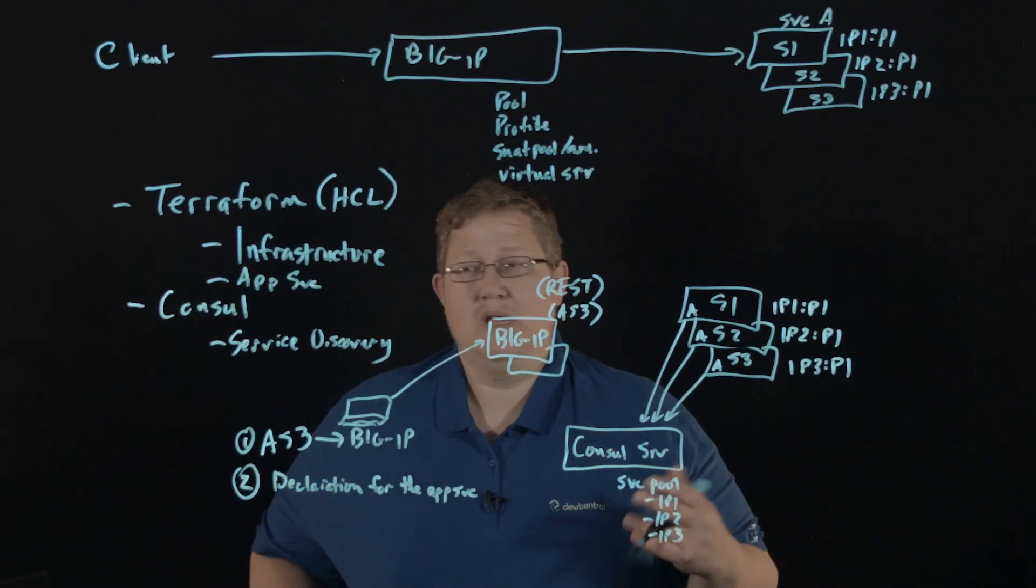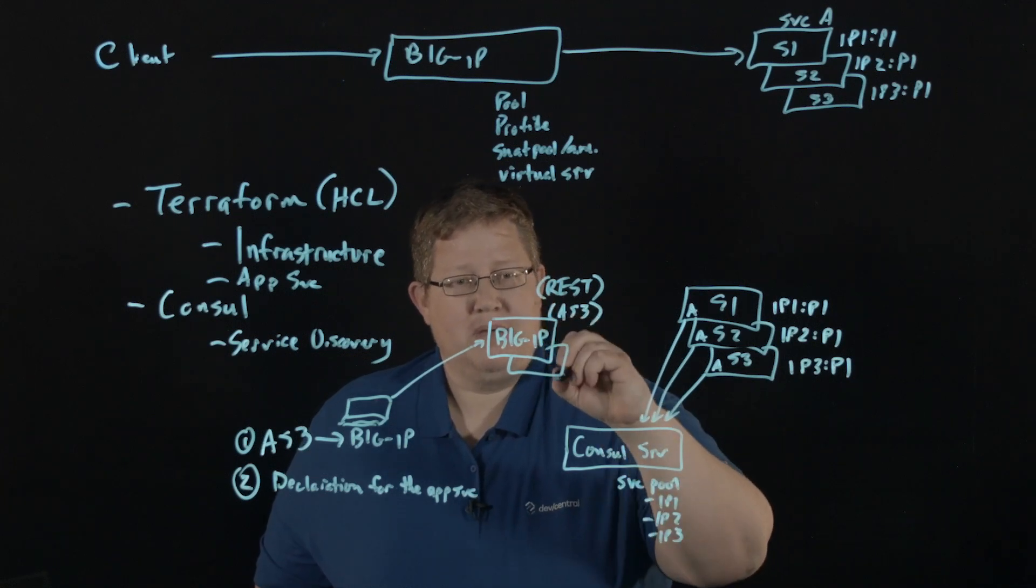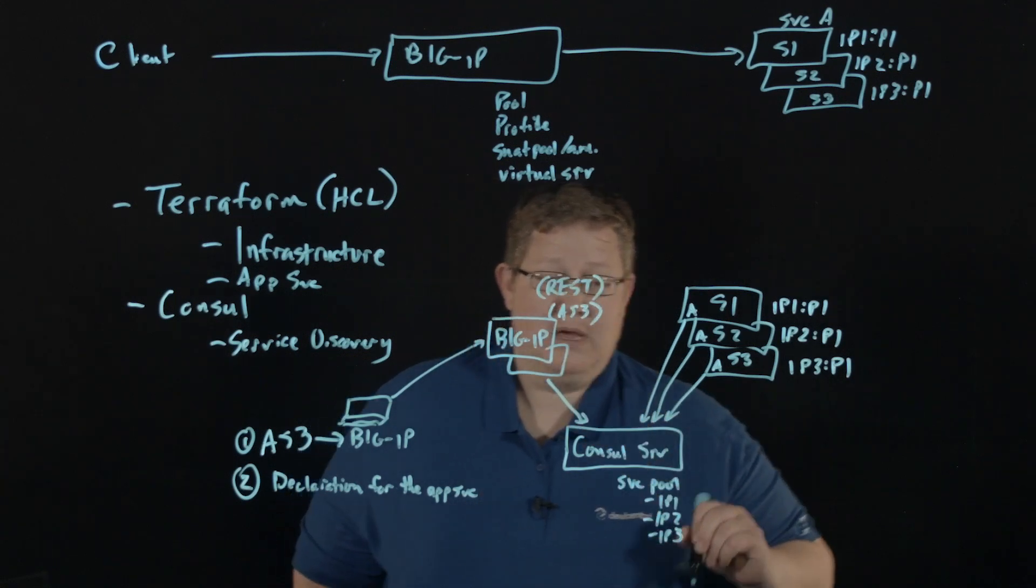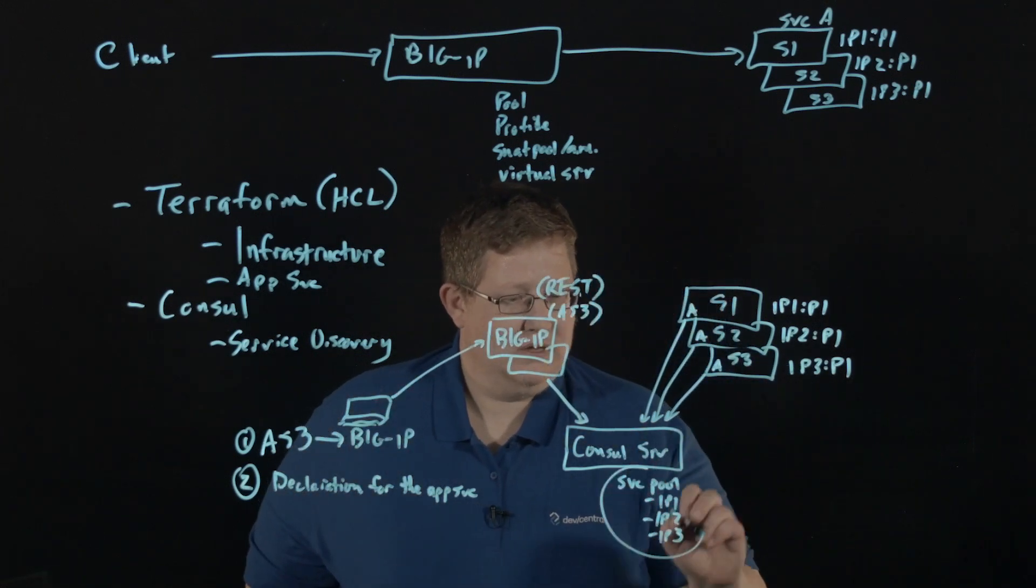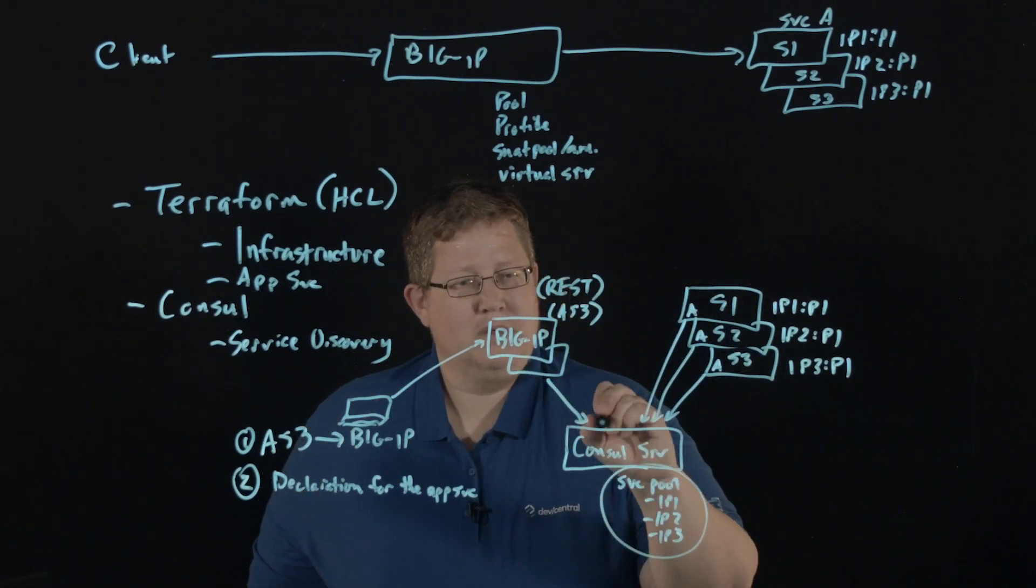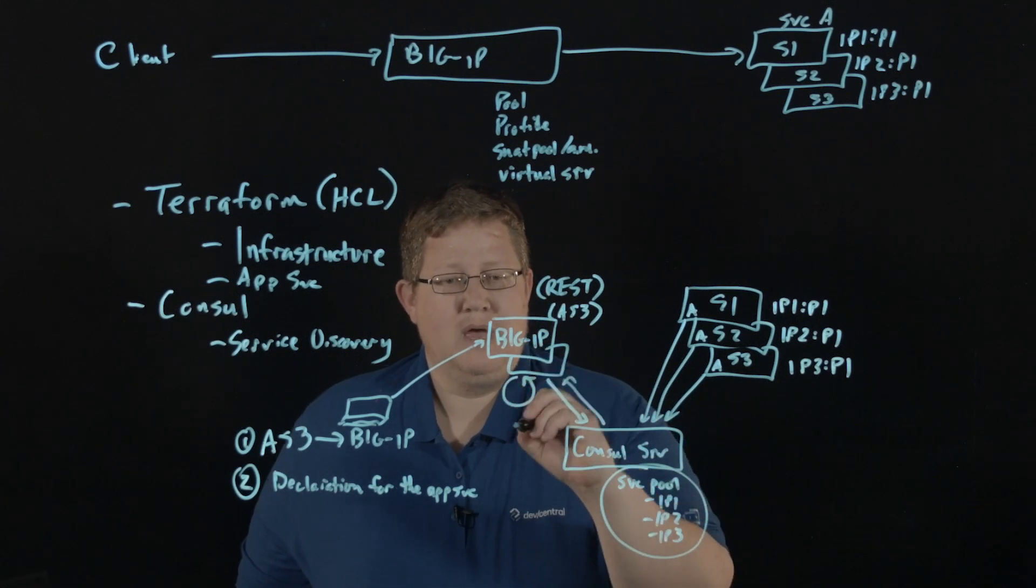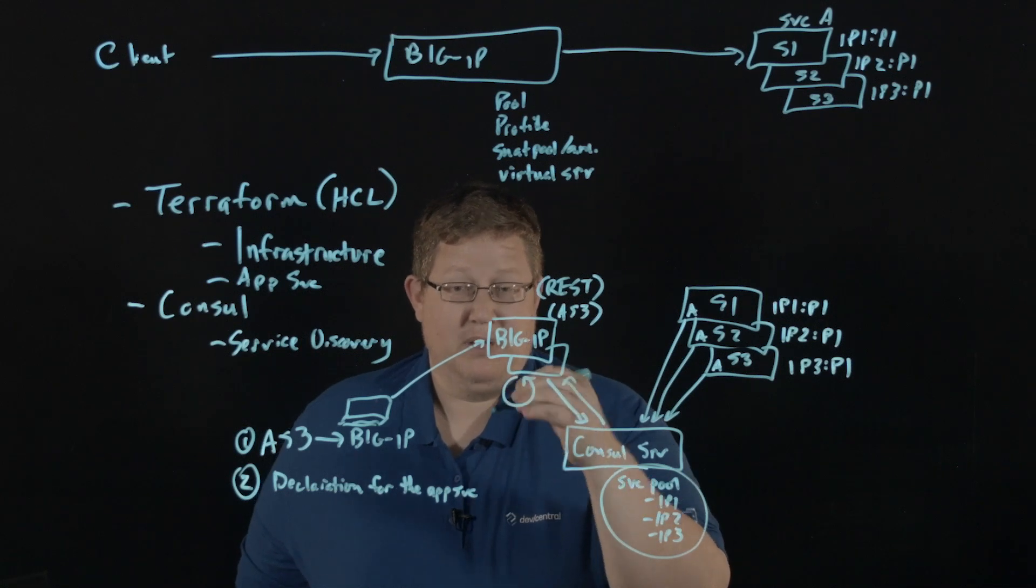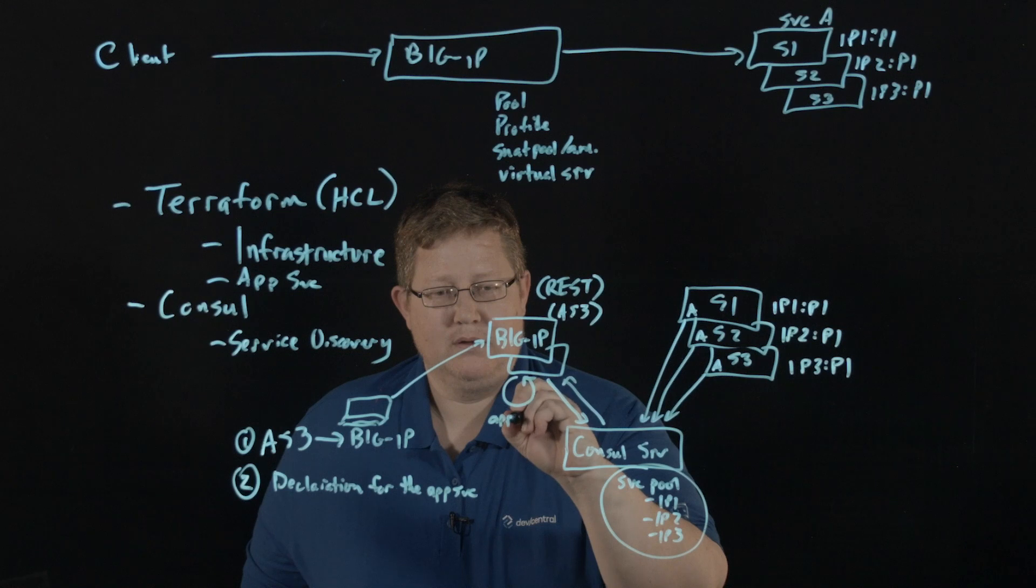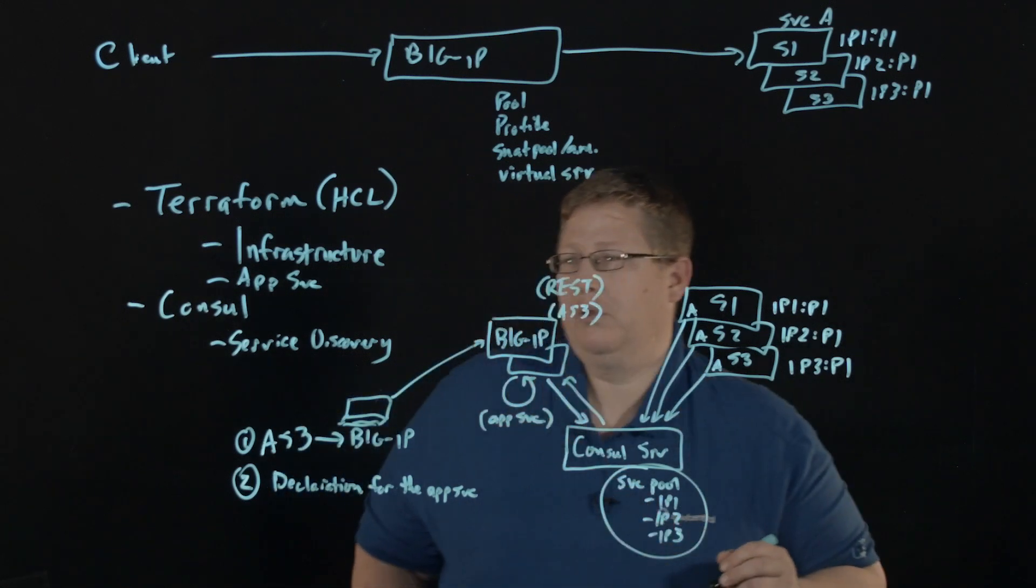I want you to check with the Consul registry. So Big IP makes a call down to the Consul service. And it returns the details from this service pool. And then it then goes through and builds out that declaration as an app service. And now that app service deployed.